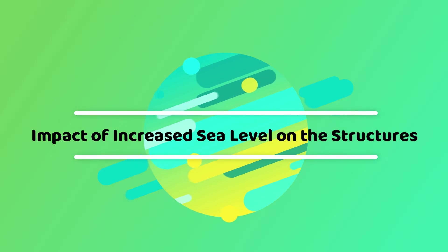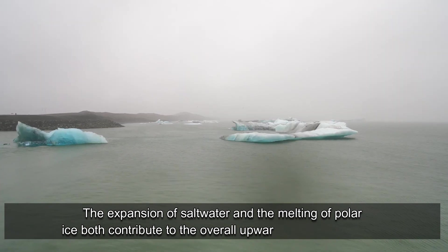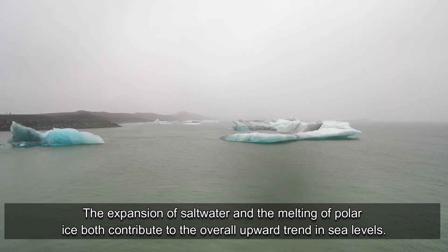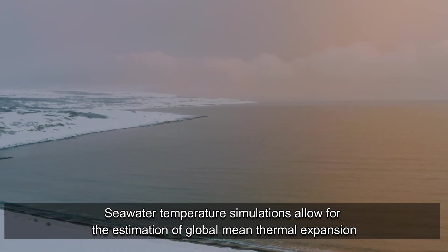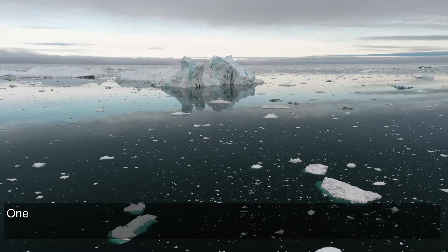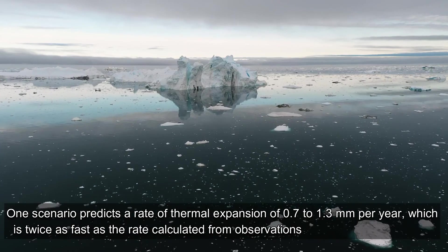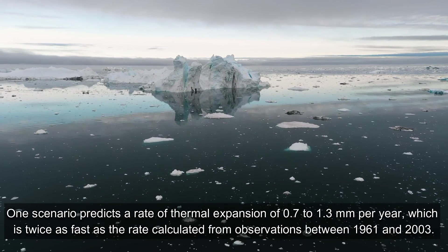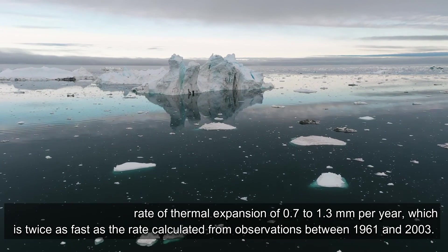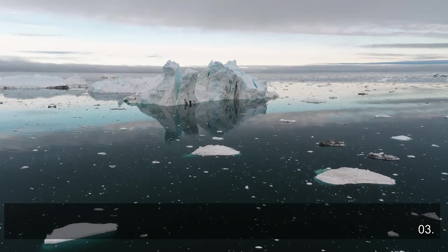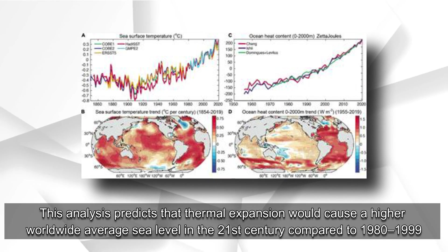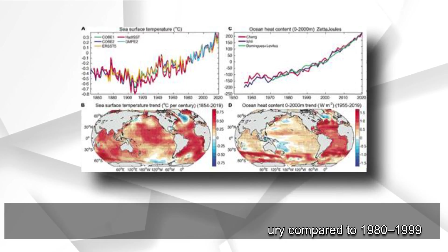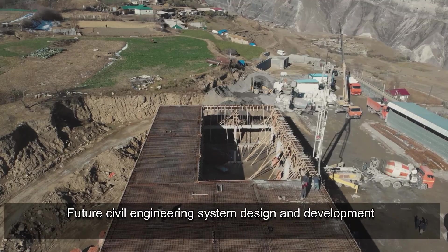The expansion of salt water and the melting of polar ice both contribute to the overall upward trend in sea levels. Sea water temperature simulations allow for the estimation of global mean thermal expansion. One scenario predicts a rate of thermal expansion of 0.7 to 1.3 millimeters per year — twice as fast as the rate calculated from observations between 1961 and 2003. This analysis predicts that thermal expansion would cause a higher worldwide average sea level in the 21st century compared to the 1980–1999 baseline.